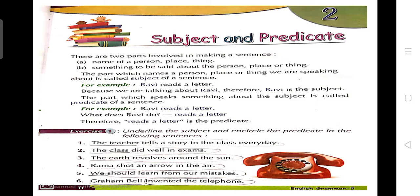A sentence is divided into two parts — that means jo sentence hote hai unki two parts hote hai. The first part is subject and the second part is predicate. Now, what is subject? Subject is what or whom the sentence is about — that means subject aapka jiske baare mein sentence mein baat ho rahi hai, woh aapka subject hota hai.